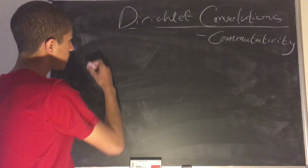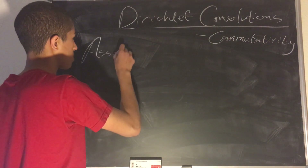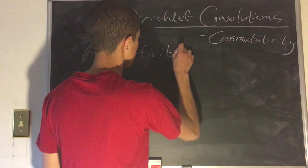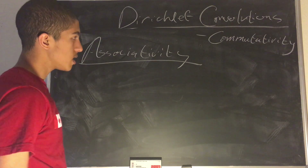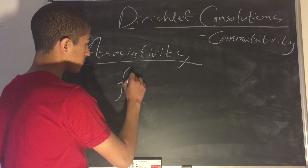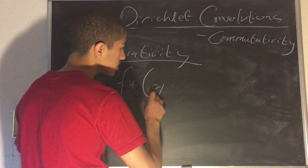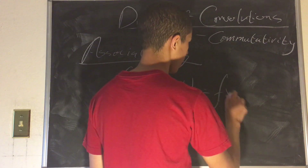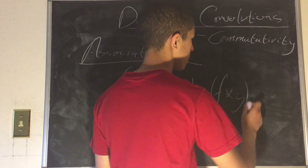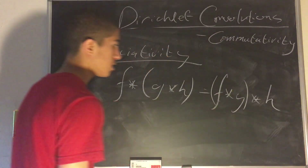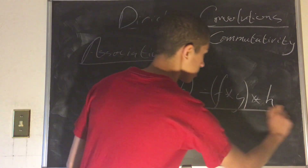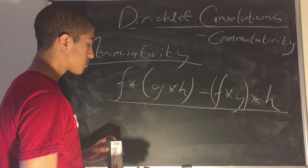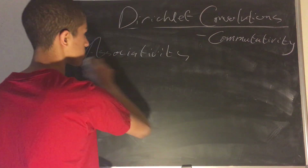Another interesting property we have is associativity. That means that f star (g star h) is equal to (f star g) star h. This is another one of the group properties found in group theory textbooks.